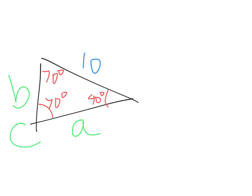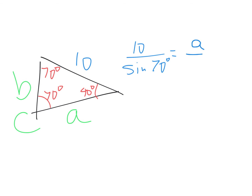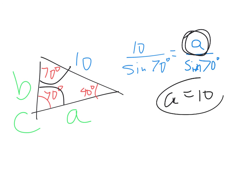Isaac set up the problem: 10 over sine of 70 equals A over sine of 70. Stepping back, if two angles are the same, the sides across from them are the same — final answer, A is 10. So why would you ever use Law of Cosines here? You wouldn't, because Law of Sines is much easier. You use Law of Cosines when you don't have enough information for Law of Sines.